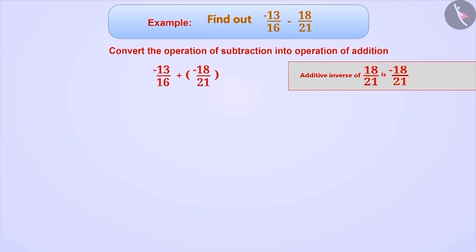To solve this, let's make the denominators equal by finding the LCM. The LCM of 16 and 21 is 336. To make the denominator of minus 13/16 equal to 336, we multiply both its numerator and denominator by 21.